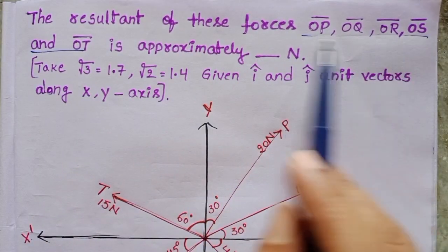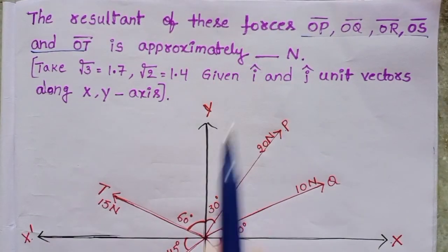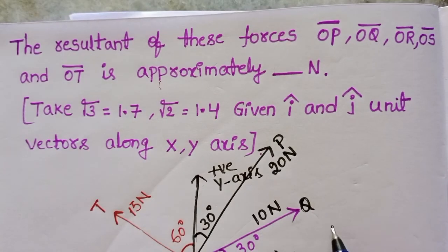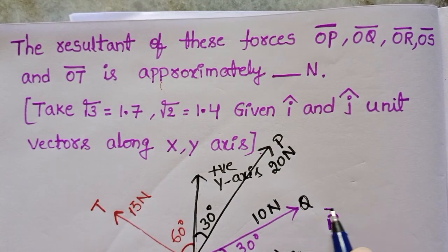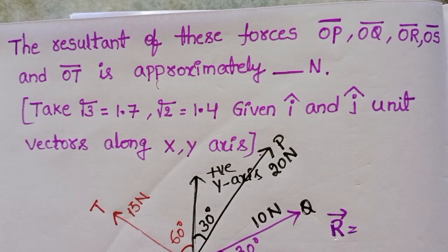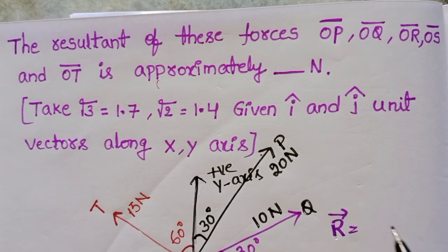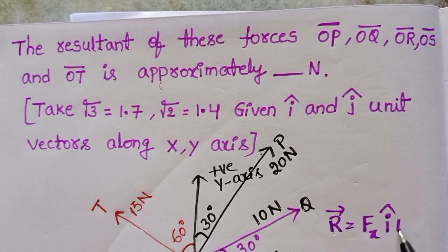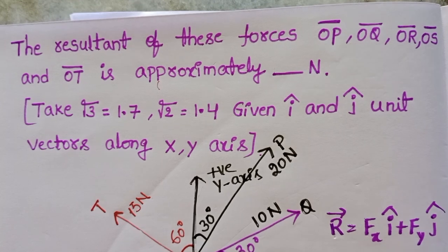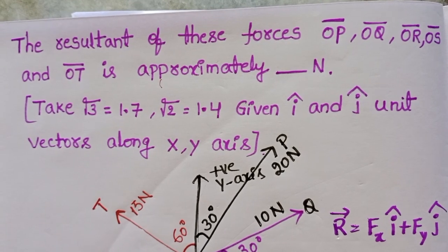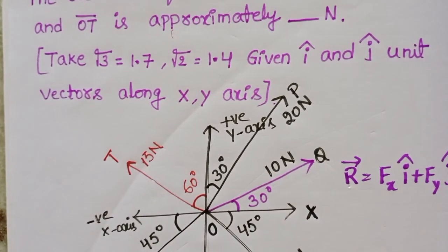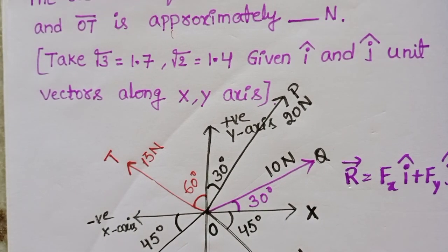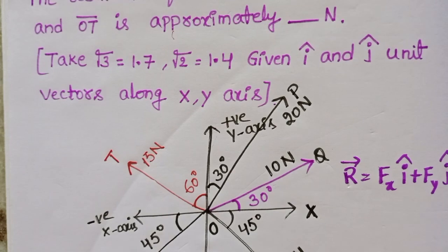The resultant of these forces is approximately dash newton. To find out the resultant of all these forces, sum the forces along the x direction plus the forces along the y direction: Fx i-cap plus Fy j-cap. First, find the components of the given forces along the x and y directions, then substitute in place of Fx and Fy. This gives the resultant of all the forces.